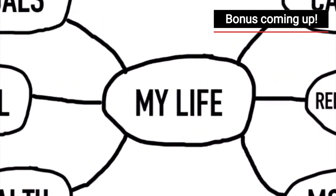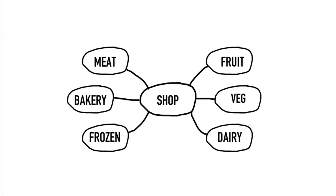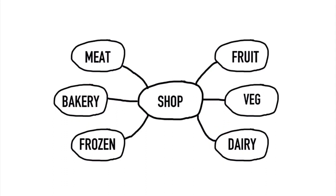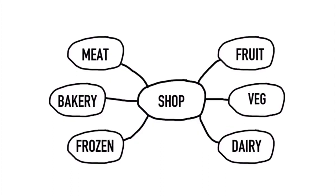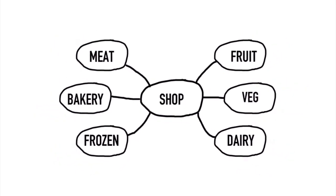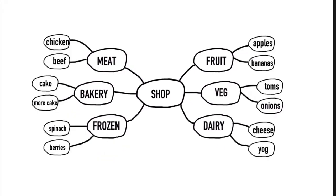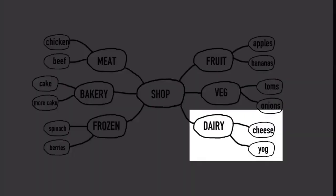Now let's look at one final practical example. Let's start with a shape and call this one 'shop.' I wanted to do this example to really show the difference between a mind map and a to-do list. Here you'll see fruit, veg, dairy, frozen, meat, and bakery — we are separating the categories of food we want to buy. It's very annoying to find items on your shopping list that are at the other end of the supermarket where you were two minutes ago. So following the process we looked at before, you'd think about what kinds of fruit, veg, dairy, etc. you want — and we have apples and bananas for fruit, tomatoes and onions for veg, cheese and yogurt for dairy, and so on. You can see why mind mapping is so powerful and effective.